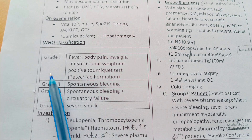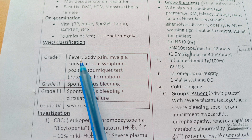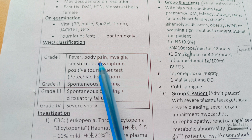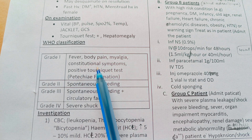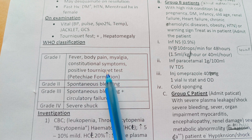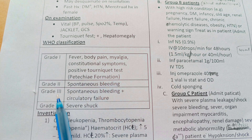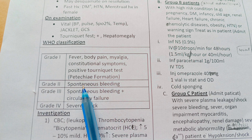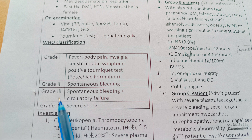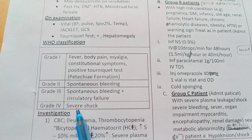WHO classification: Grade one — fever, body pain, myalgia, constitutional symptoms, positive tourniquet test. Grade two — spontaneous bleeding. Grade three — spontaneous bleeding with circulatory failure. Grade four — severe shock.